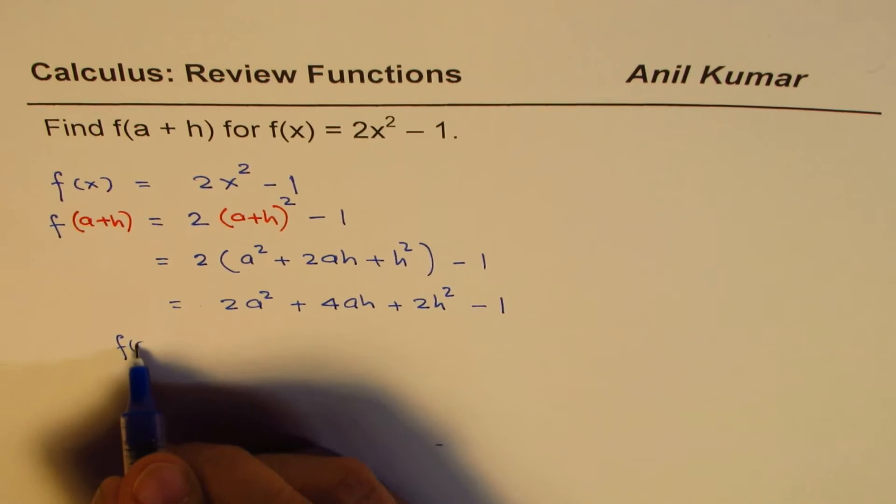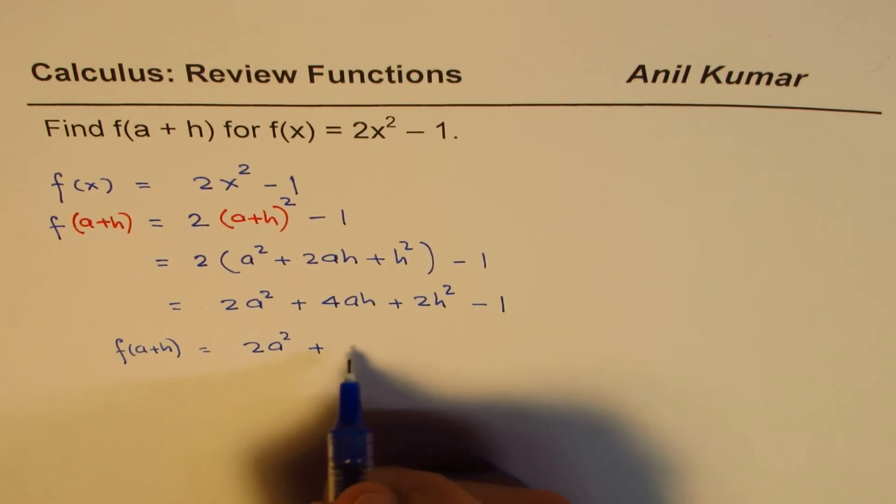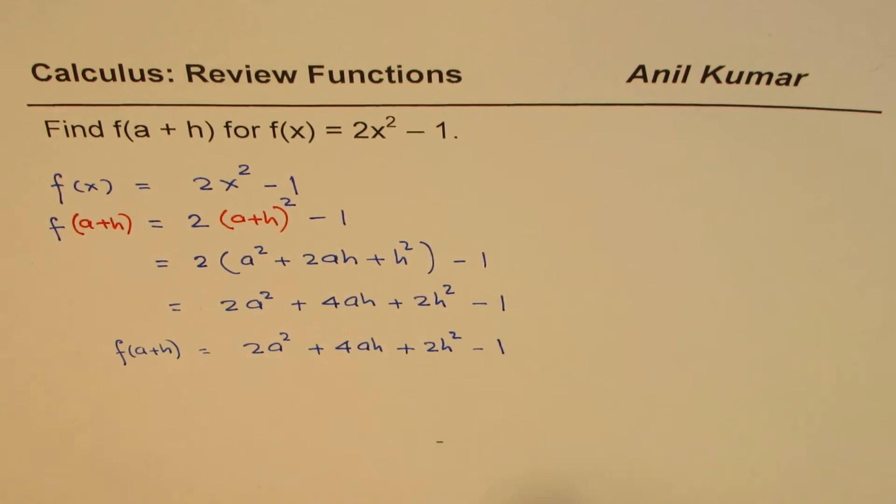Let's write down: f(a+h) = 2a² + 4ah + 2h² - 1.